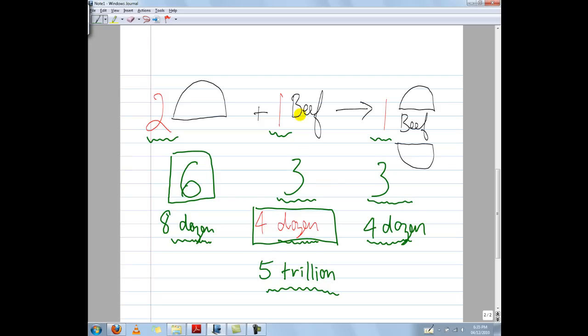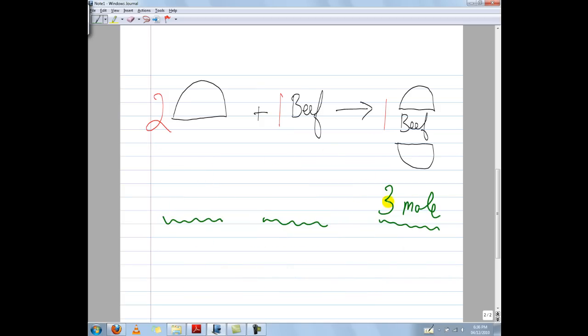We can do the same with freakishly large numbers. So for instance, if I have five trillion beef patties, well, how many trillion buns will I need? Twice as much. Ten trillion. Or over here, same amount. Since it's a one to one ratio, well, it's going to be five to five, so five trillion hamburgers are going to be created. And similarly, we can also use the mole. So if I have three mole of hamburgers, well, then how many mole of beef patties do I need? Well, it's a one to one ratio, so three mole. And it's a one to two ratio, so twice as many, so that's going to be six mole.